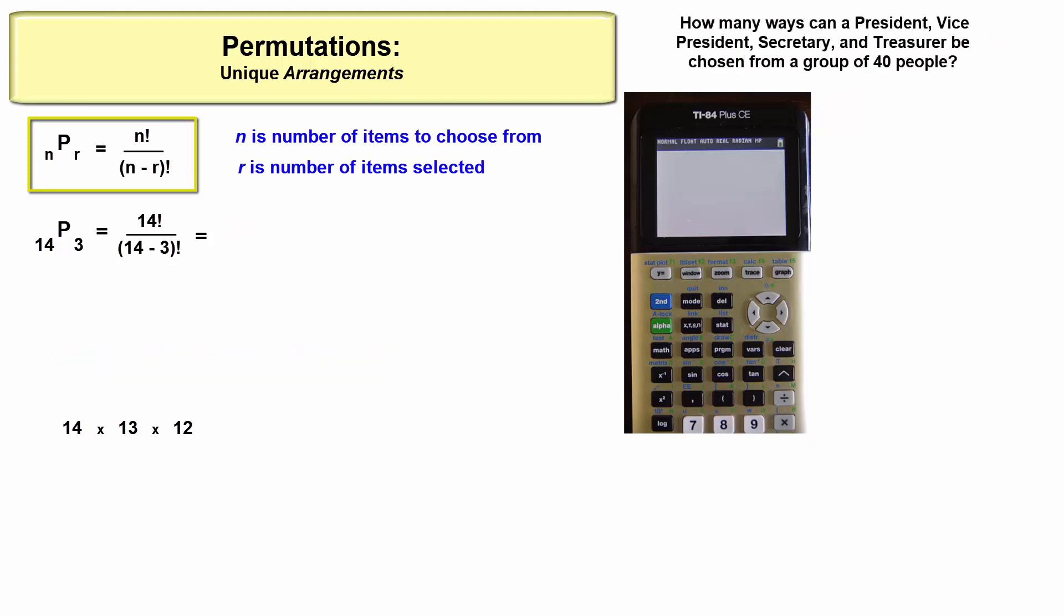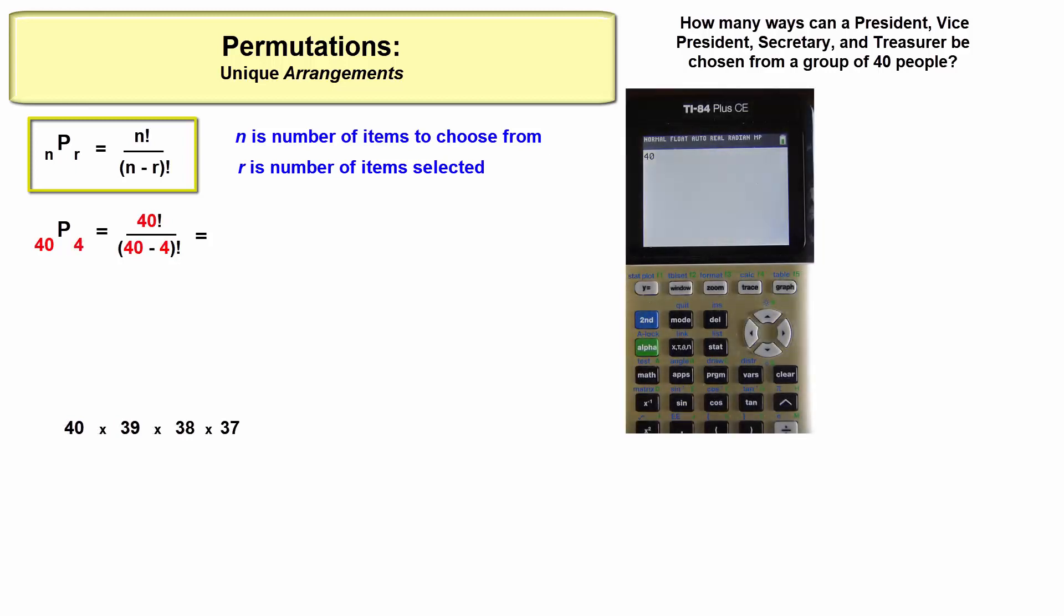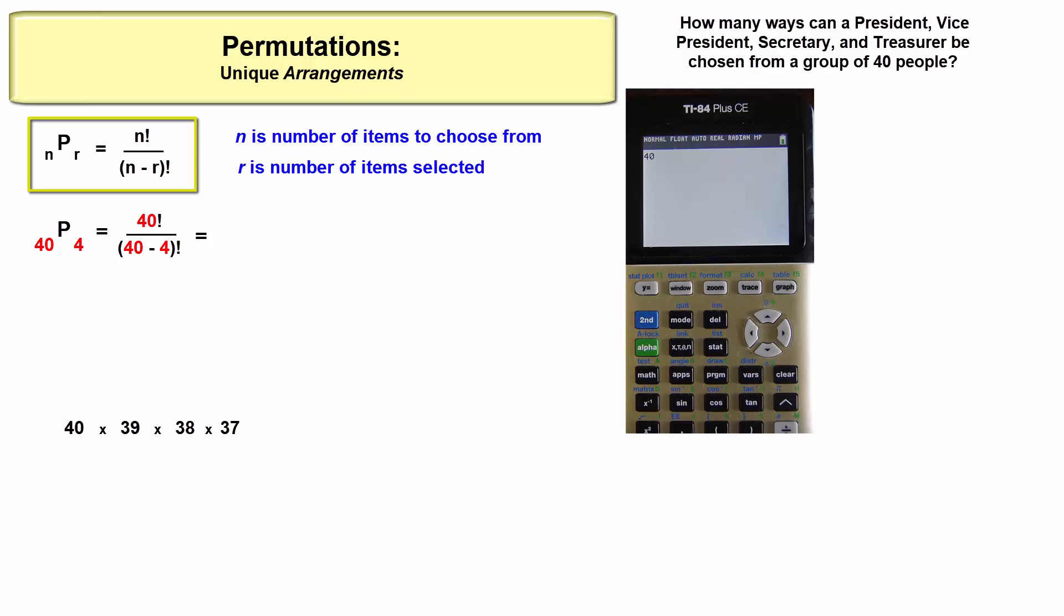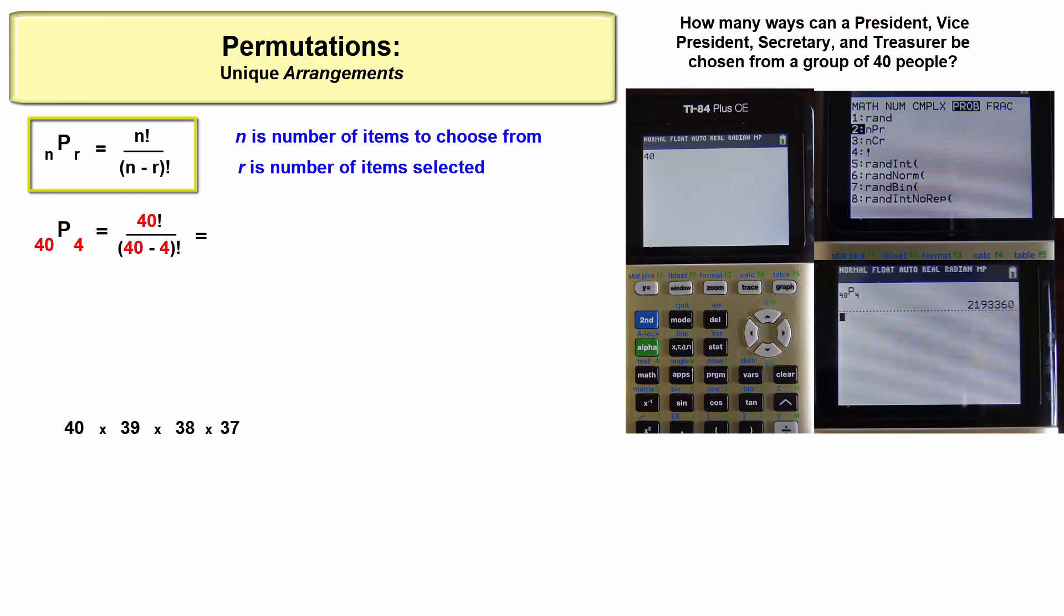Watch how we can use the permutation function on the calculator to determine the number of permutations possible in choosing a president, vice president, secretary, and treasurer from among 40 people. We type 40 in first to give the calculator the value of n, then we go to the math button, over to the probability menu, and choose option two. We'll type in 4. So four things selected in order from 40 available gives us 2,193,360 - the permutations of four people selected from 40.